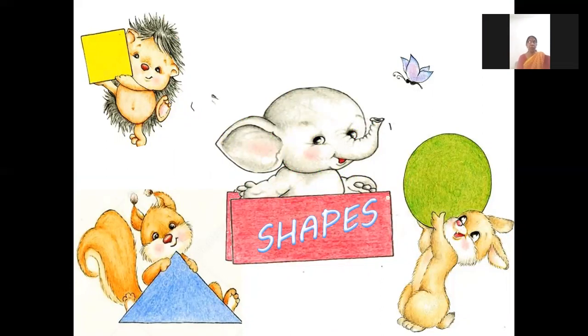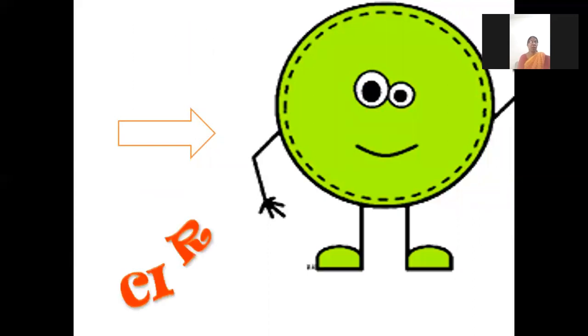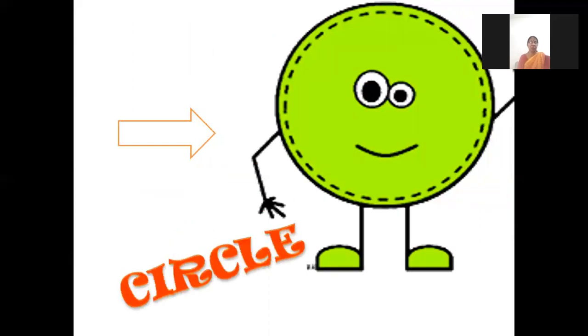Shapes — today Mamma is showing us shapes. Just see what will come now. Circle. What is this? It is a circle — round in shape.